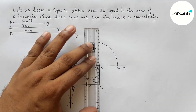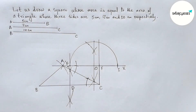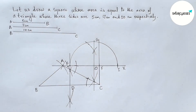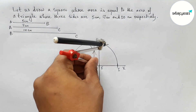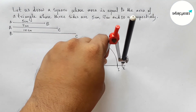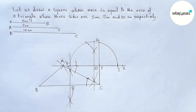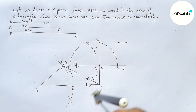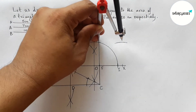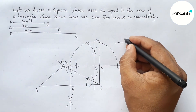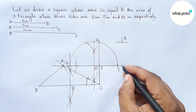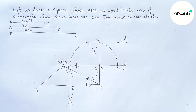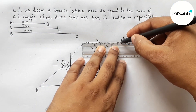Extending the line CF, which meets the semicircle here at a point — taking that point as G. Now taking FG with the compass and cutting here. With the same length, putting the compass on point G and cutting here, taking point H and point K.